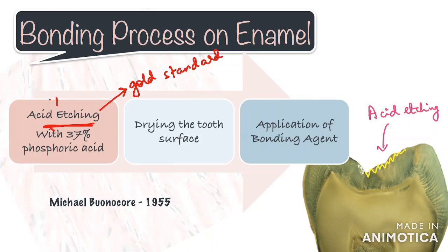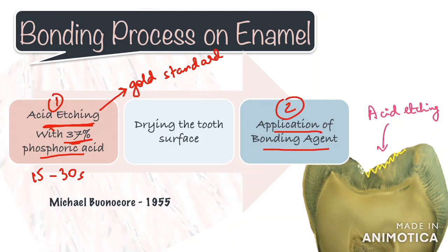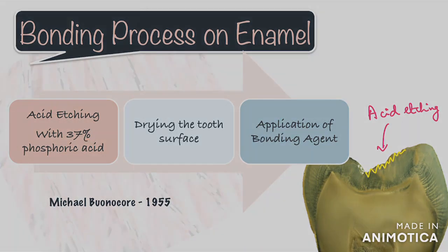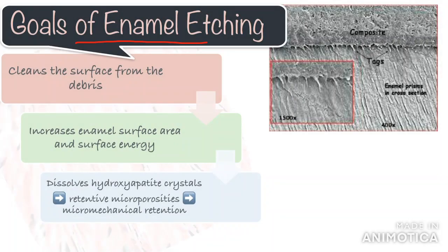Bonding to enamel consists of two clinical steps: first is acid etching, using 37 percent phosphoric acid for 15 to 30 seconds, followed by the application of adhesive resin or bonding agent to the etched surface. After preparation of the tooth surface, debris forms which compromises bonding. Etching cleans the enamel surface from this debris. Additionally, acid etching increases the enamel surface area and surface energy, which in turn improves bonding.